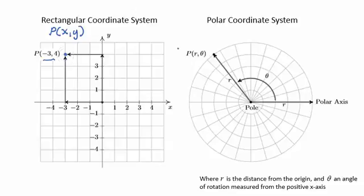In the polar coordinate system, a point is identified with an ordered pair r theta, where r is the distance from the origin, and theta is an angle measured from the positive x-axis.